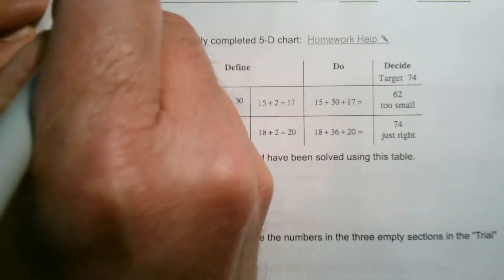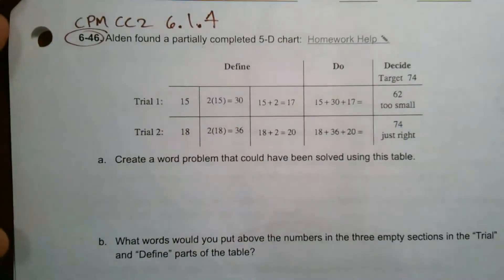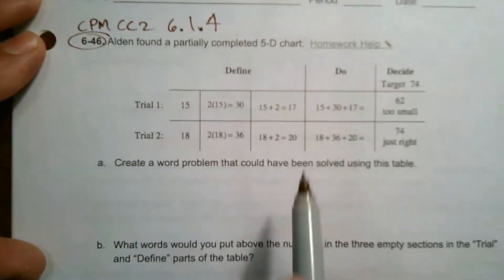So this is a problem I'm taking from CPM Course 2, section 6.1.4, and specifically number 6-46. It says Aiden found a partially completed 5D chart.